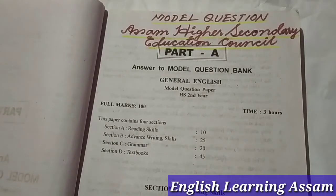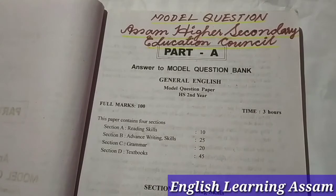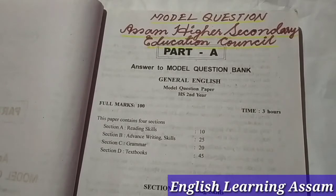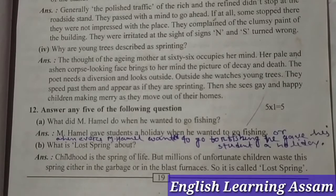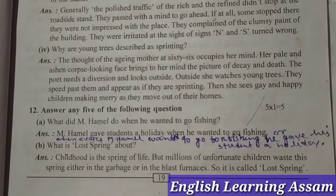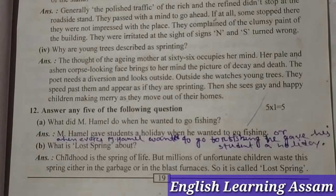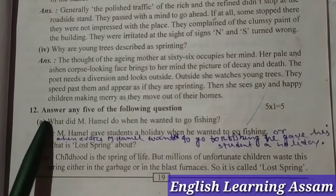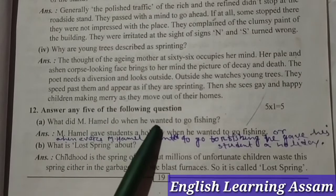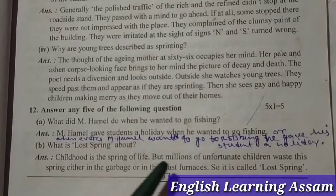Today I start to solve the Textbook Prose section. Now I have a section dealing with the Textbook — forty-mark short and long prose questions. Question number 12: Answer any 5 of the following questions. 5 into 1 equal to 5.